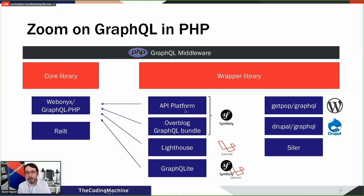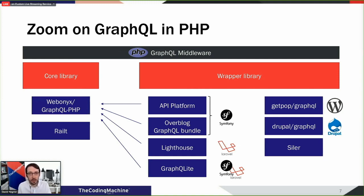On top of core libraries, there are wrapper libraries, and there are many of them. All those libraries are using WebOnyx under the hood - they are wrappers around WebOnyx to make it easier to use. We have API Platform and the Overblog GraphQL bundles used with the Symfony framework. If you're doing Laravel, you can use a library called Lighthouse. And for CMS like WordPress or Drupal, there are modules to present a GraphQL API. There is also GraphQLite, which I've been authoring for the last two years, and which is framework agnostic.